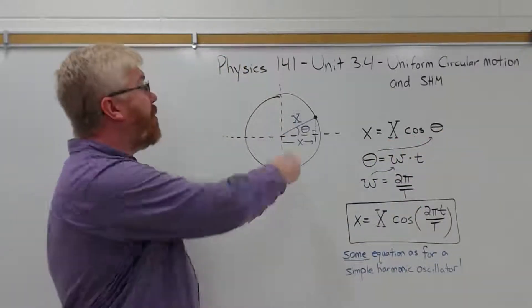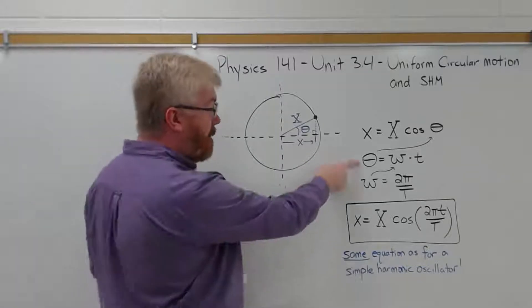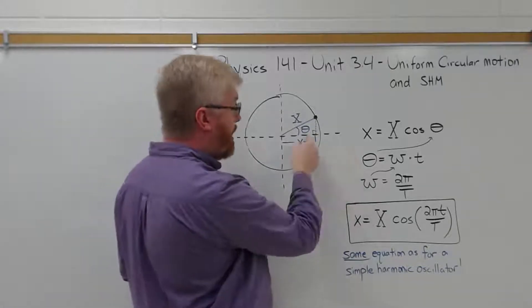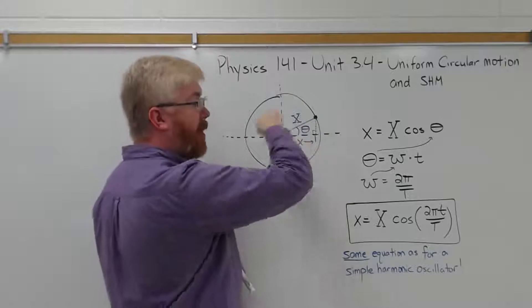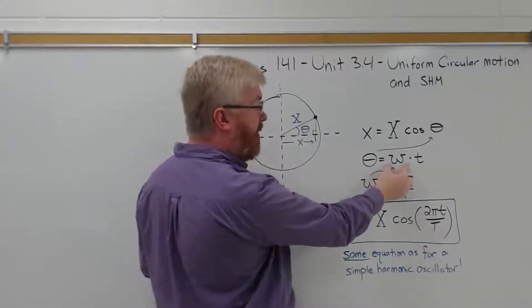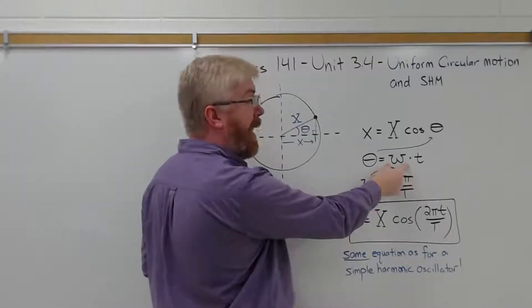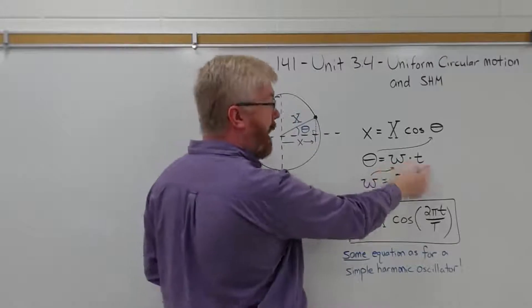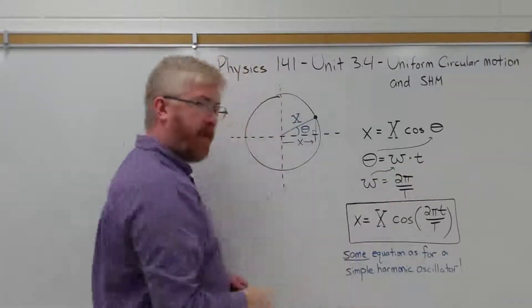But this is uniform circular motion. So the angle theta is equal to, because theta changes with time as this thing goes around, it depends on how fast is it spinning, the angular speed, and how long has it been spinning, the time.